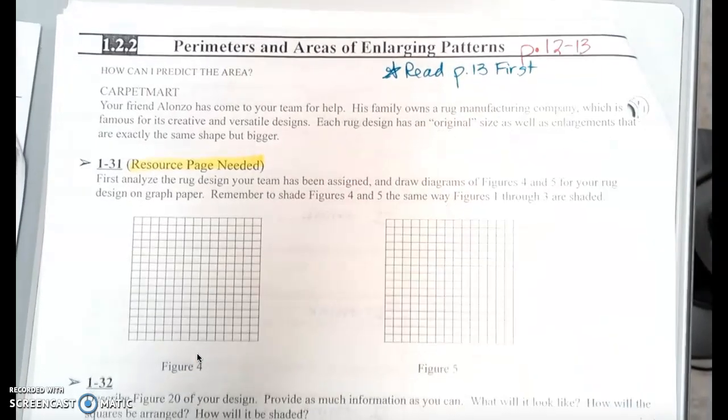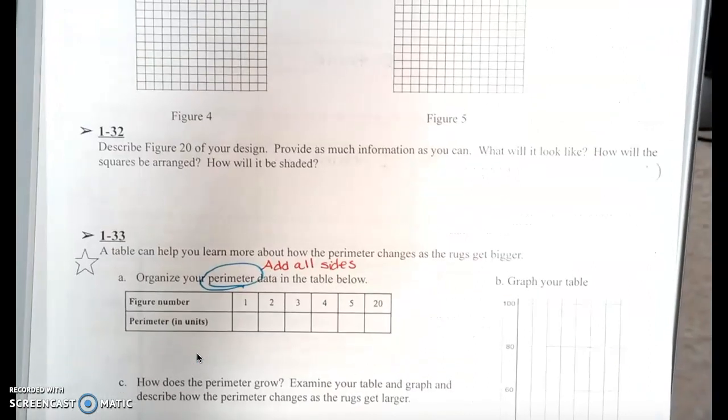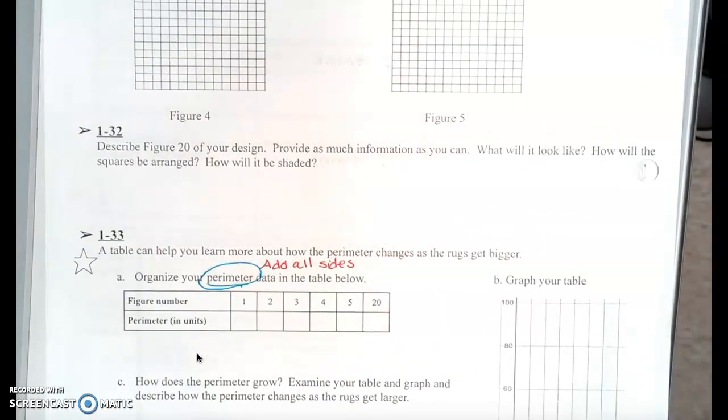Then when you get down to question 32, it says, describe figure 20. Does it ask you to draw figure 20? No, because they would be huge. They're going to get really big really fast. You're just going to describe in words what figure 20 will look like. Provide as much information as you can. What will it look like? How will the squares be arranged? How will it be shaded? Those three pieces of information.